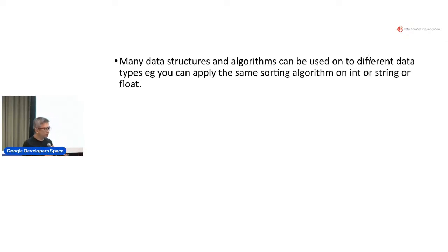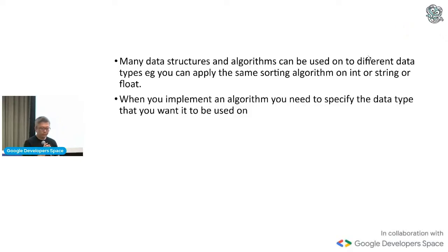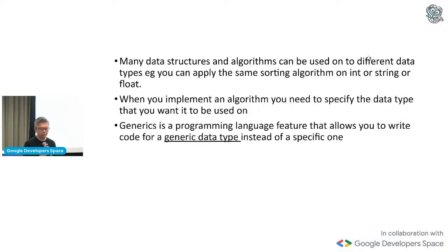But it's the same algorithm or the same data structure or the same function. So an example is, for example, you want to do a sort. You don't necessarily just sort an int but you can also want to sort a float, sort a string and so on and so forth. And in Go, if you want to implement an algorithm, you do need to specify the data type you want to use. So you can't run away from that because Go is a statically typed programming language. Like many statically typed programming languages, you do need to specify the type that you want to use.